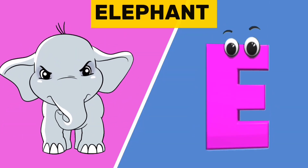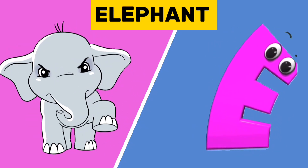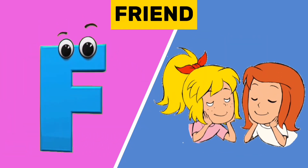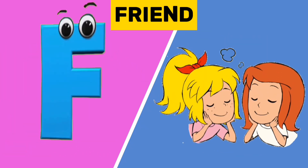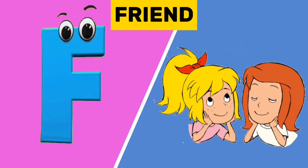E is for elephant. E, E, elephant. F is for friend. F, F, friend.